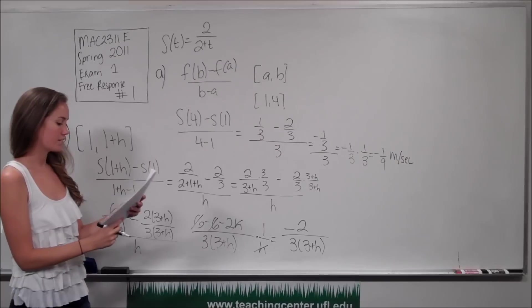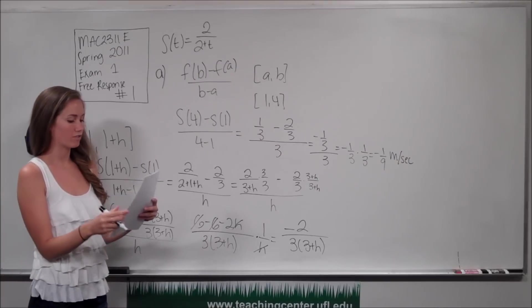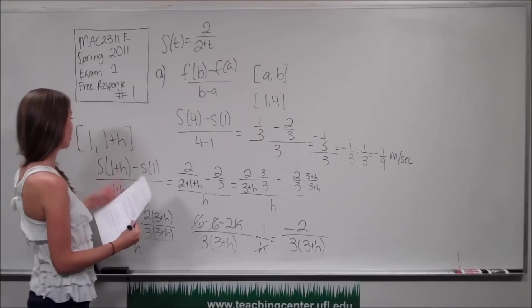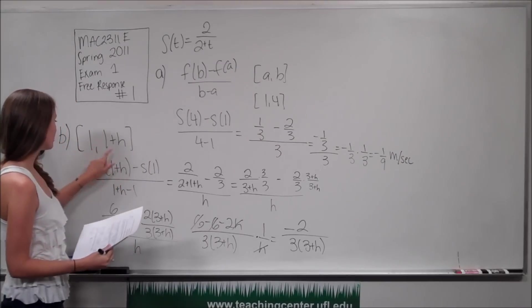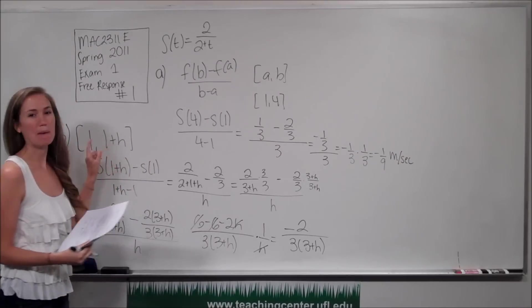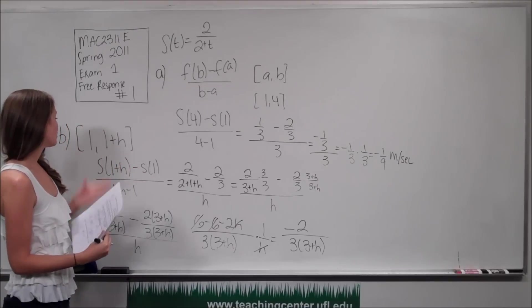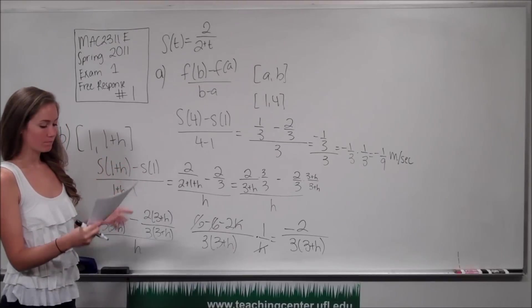This is the formula for the average velocity of the object on the interval 1 to some time after 1. And so we're done with part b.